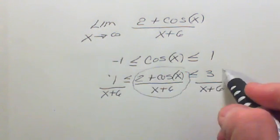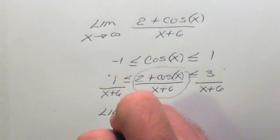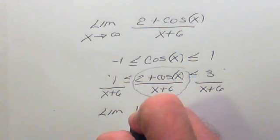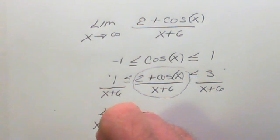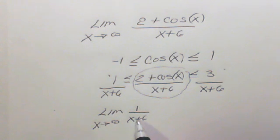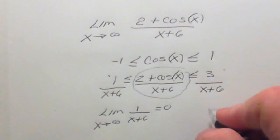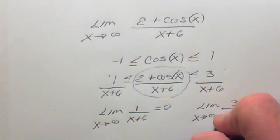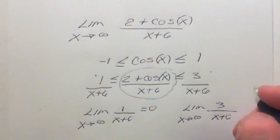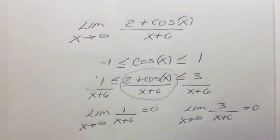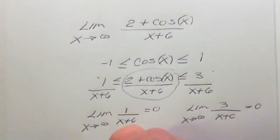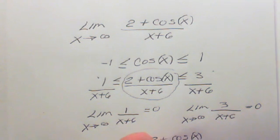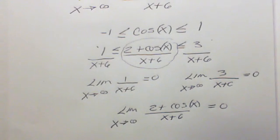All I have to do is apply the limit on the left and right sides. If I take the limit of 1 over (x plus 6) as x approaches infinity, I get a huge number in the denominator, which means this function goes to zero. If I take the limit of 3 over (x plus 6) as x approaches infinity, my denominator is also becoming huge, so I also get zero. I've sandwiched the function between the two, so the limit of (2 plus cosine x) over (x plus 6) as x approaches infinity has to equal zero.